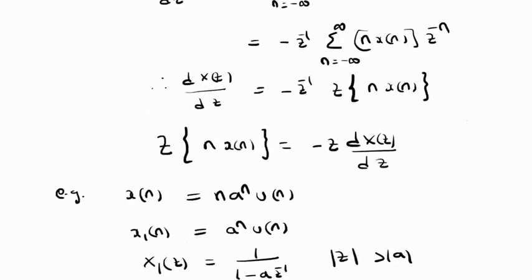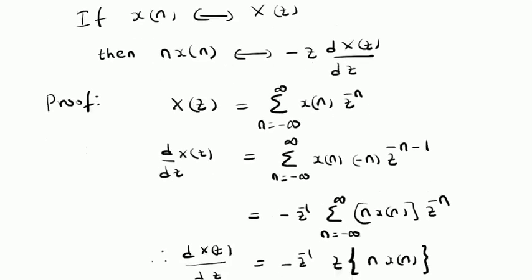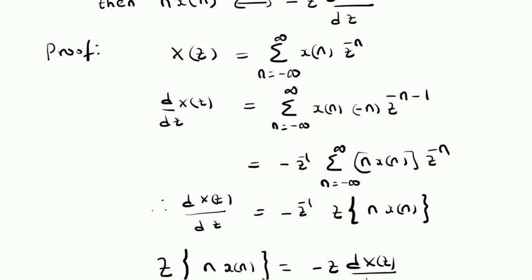To summarize: given X of n with Z transform X of Z, the Z transform of n times X of n is given by minus Z times the derivative of X of Z with respect to Z. The proof follows from the definition — we apply a derivative on both sides, and the right side term becomes minus Z inverse times the Z transform of n times X of n.